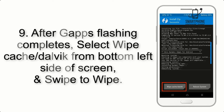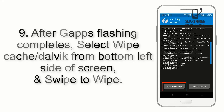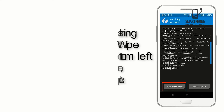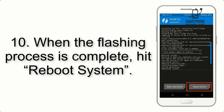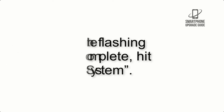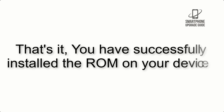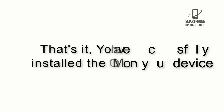Step 9: After GApps flashing completes, select Wipe Cache and Dalvik from the bottom left side of the screen and swipe to wipe. Step 10: When the flashing process is complete, hit Reboot System. That's it — you have successfully installed the ROM on your device.